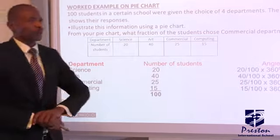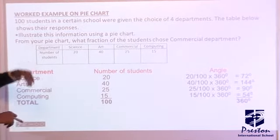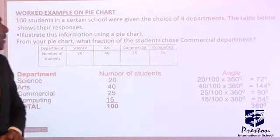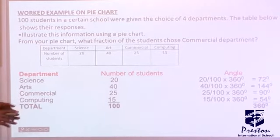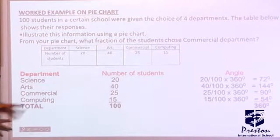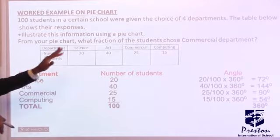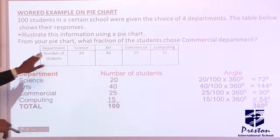Let's take an example. The question says, or the example says rather, 100 students in a certain school were given the choice of 4 departments to choose from. The table below shows their responses. Illustrate this information using a pie chart. From your pie chart, what fraction of the students choose commercial department?